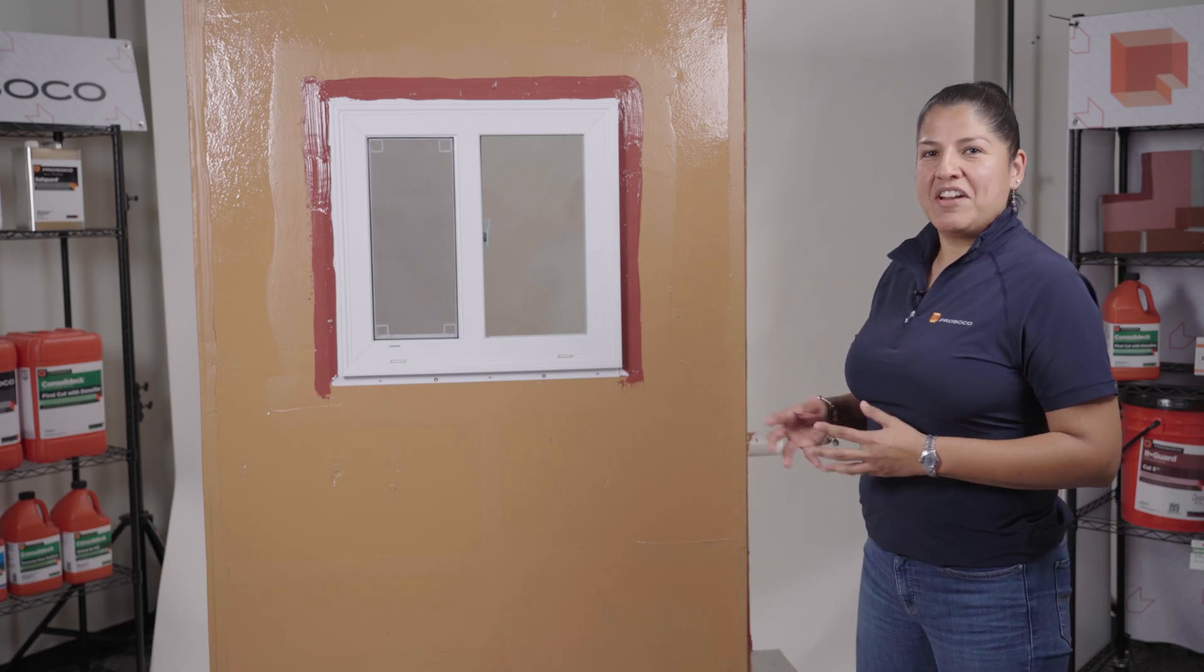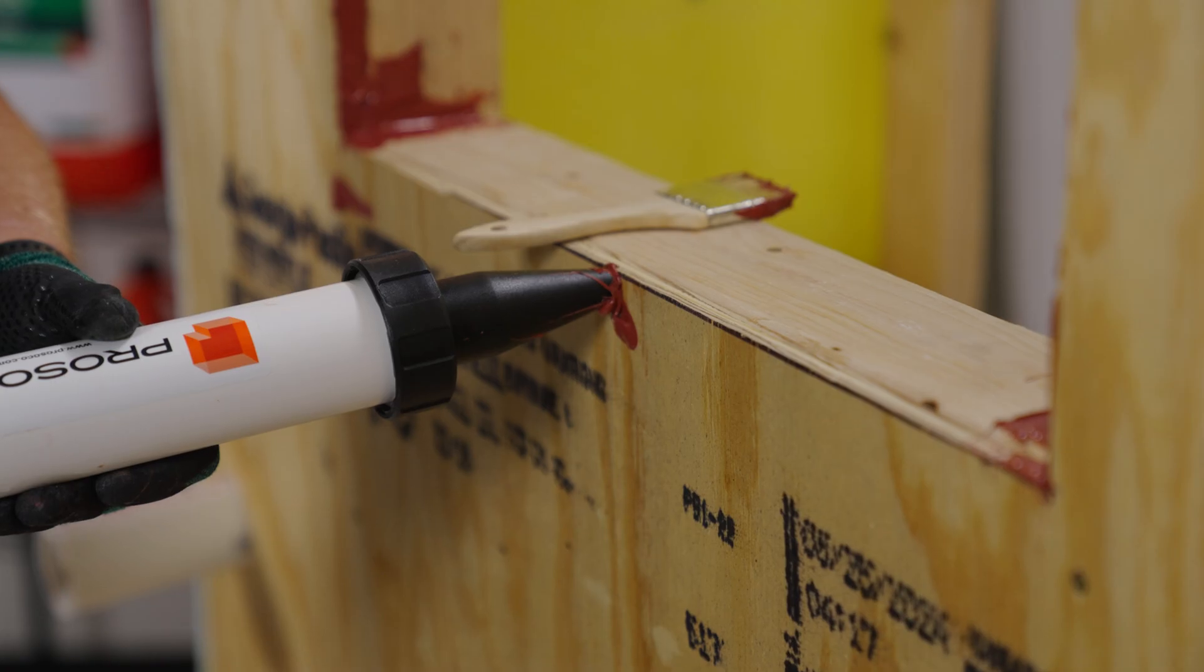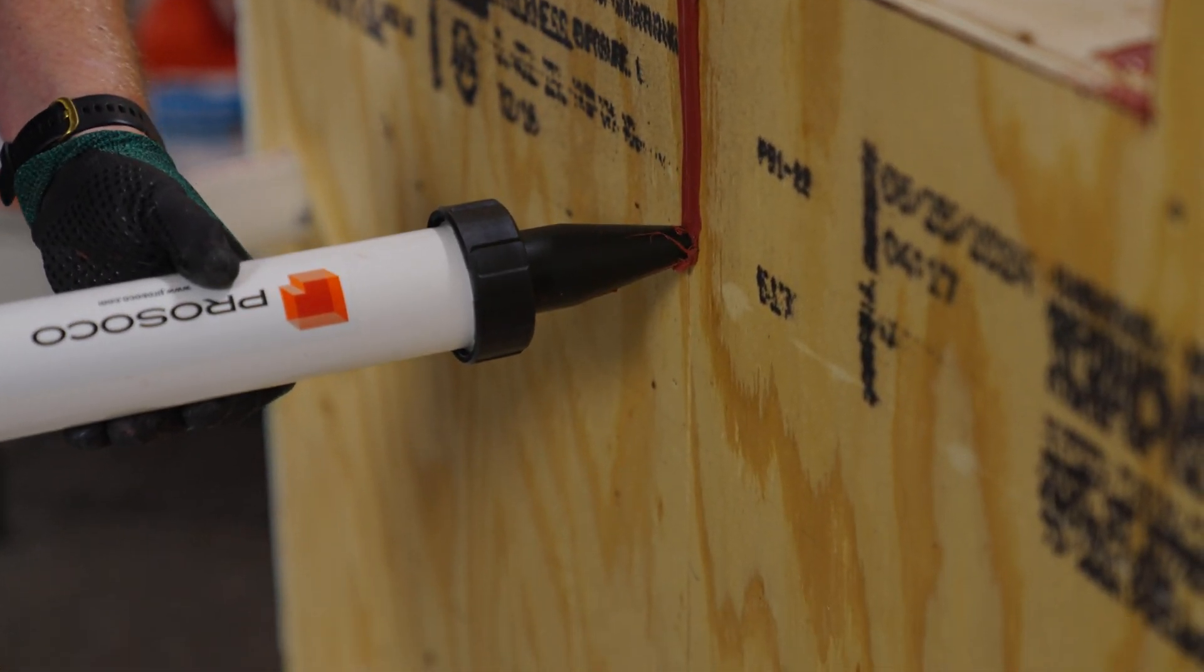In addition to gun-grade Fast Flash, we also offer roller-grade. After you've treated your rough opening, corners, and any joints and seams with the gun-grade, you can come back and roll on the roller-grade.